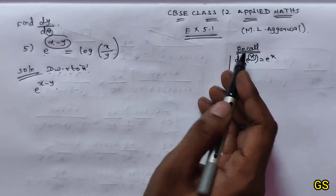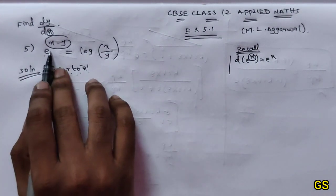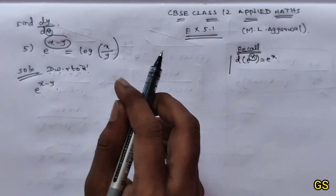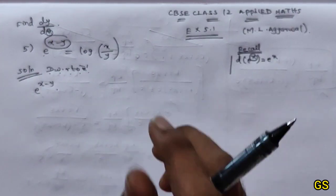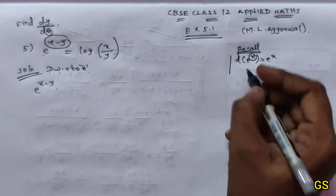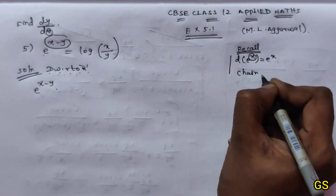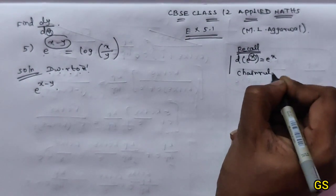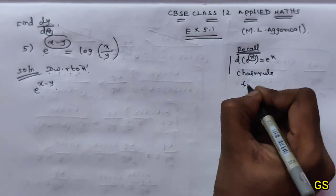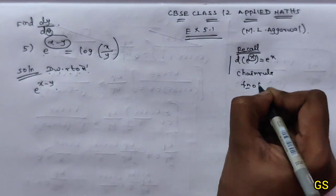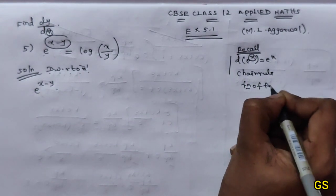x is a function placed where we are — we are using the chain rule. Chain rule, also called the function of function rule.